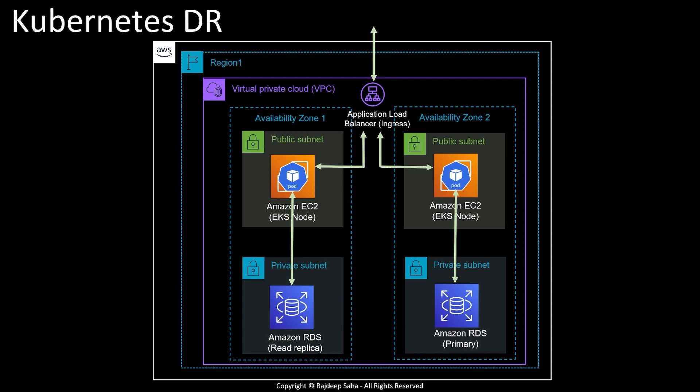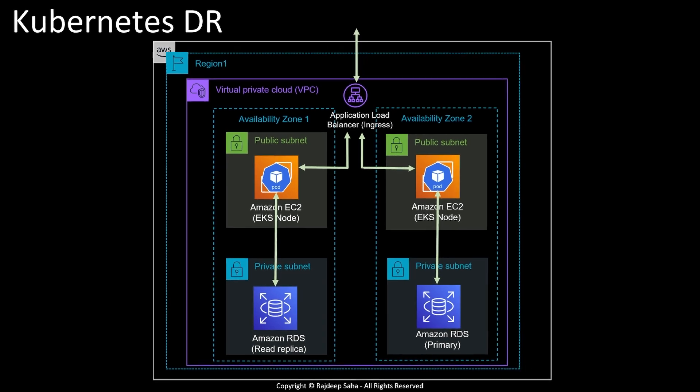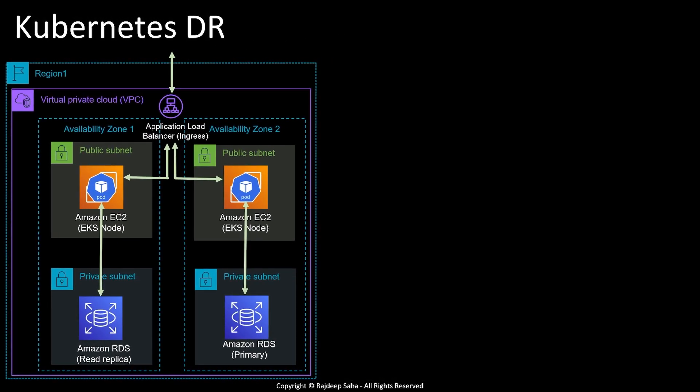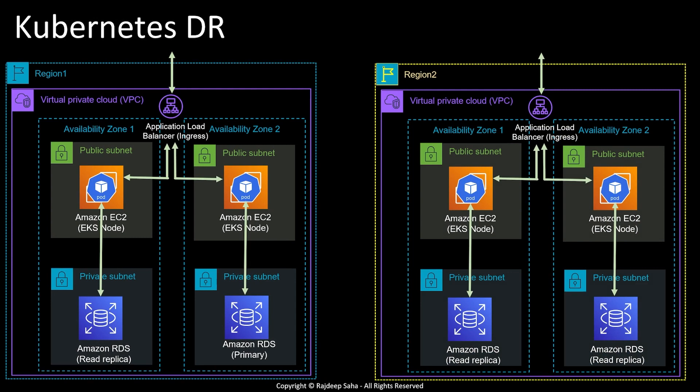Out of the box, the load balancer and EKS cluster are all regional services and they will span multiple availability zones. So even if one availability zone goes down, your application will still be up and running. However, if the whole region — region one — goes down, your application will be down too. To avoid that, you need to have the same architecture running in another region, so you need to spin up another EKS cluster and have some way to get the data in the database running in that region.